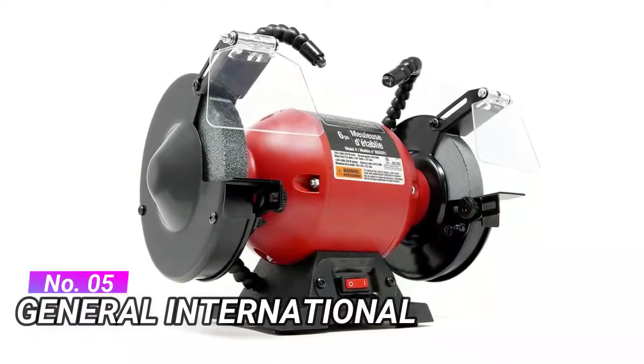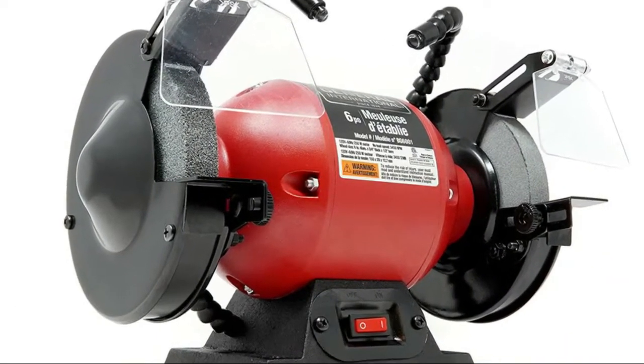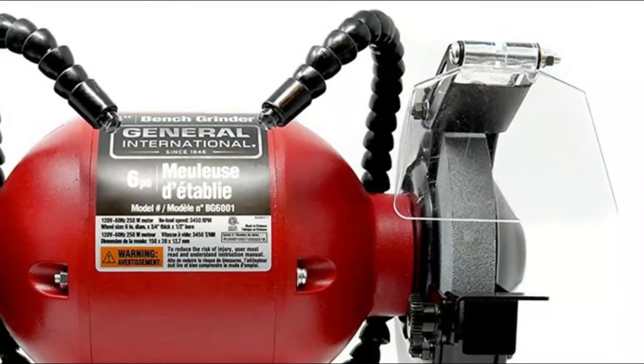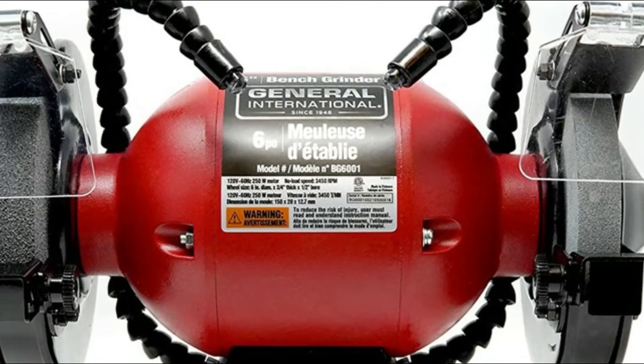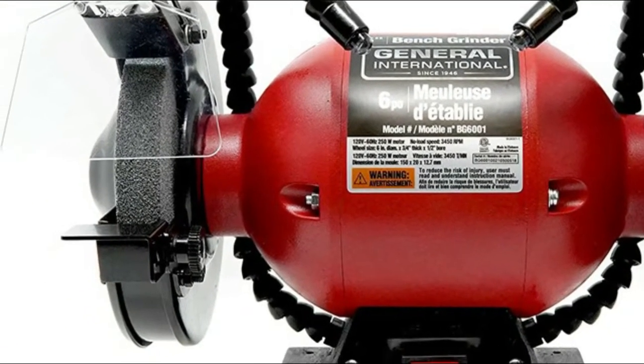Number 5, General International. This general grinding machine features two articulating flex lights allowing for maximum adjustability and optimum illumination of your workpiece. Features a powerful 120V 60Hz 250W maintenance free motor with a no load speed of 3450 RPM making it ideal for home and professional use.